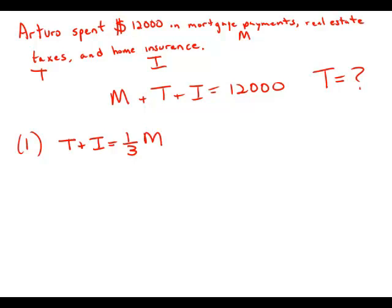Well, this is interesting because what we could do is glom T plus I together as a single thing. And so let's call that just K. So K equals one third M. And then in the equation that we're given, we can also combine the T plus I. So then we get M plus K equals 12,000.